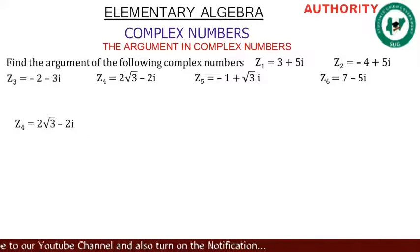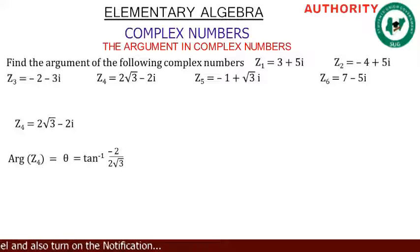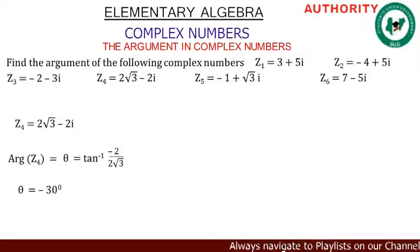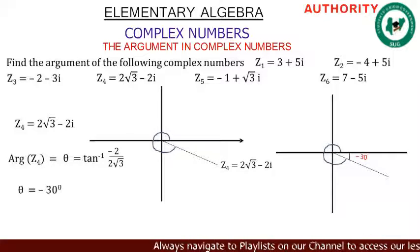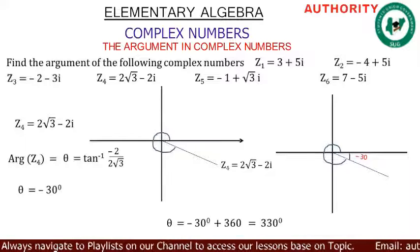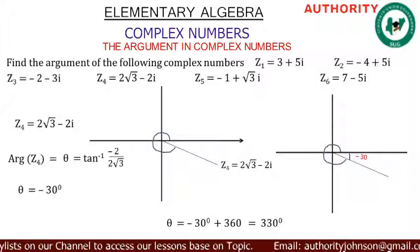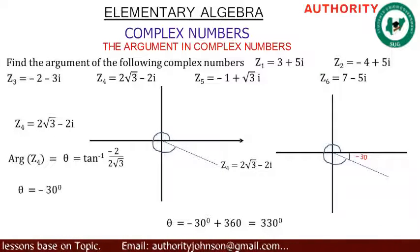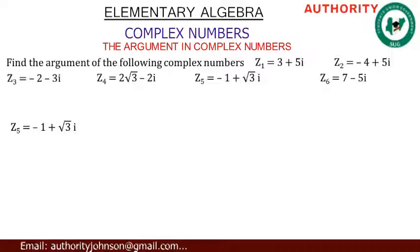For z4 = 2√3 - 2i: arg(z4) = θ = tan⁻¹(-2 / 2√3) = -30°. This is negative, so we add 360°: -30° + 360° = 330°.